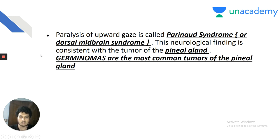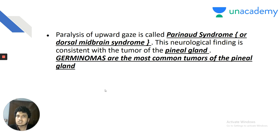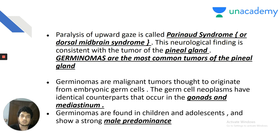Germinomas are the most common tumors of the pineal gland. The most common site of germinoma overall is the gonads, not the pineal gland. The second most common site is the mediastinum, and the third most common site is the pineal gland. Germinomas are malignant tumors originating from embryonic germ cells, found in children and adolescents with a strong male predominance.